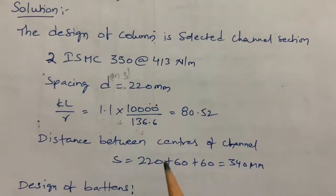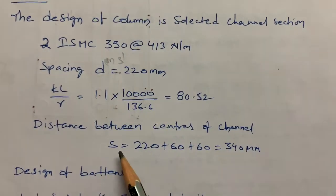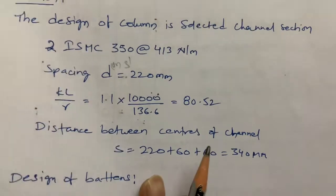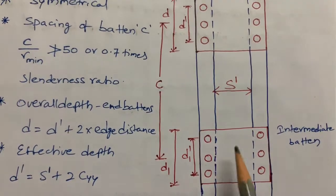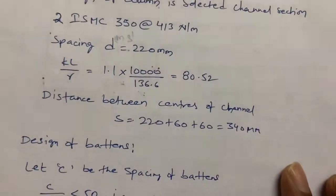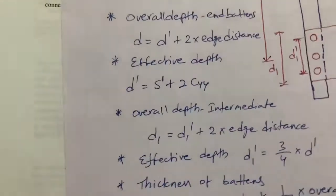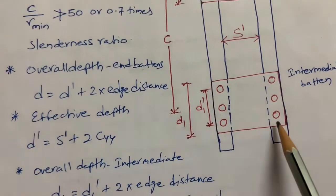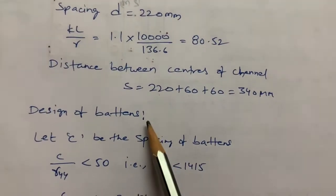After finding the slenderness ratio, I calculate the distance between centers of channels, 's'. As shown in the diagram, 's' equals 220 mm (spacing) plus 60 mm (gauge distance on one side) plus 60 mm (gauge distance on the other side), giving s = 340 mm. The gauge distance of 60 mm is measured from the channel web to the bolt center on each side.